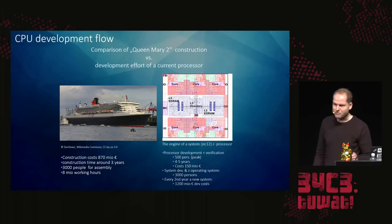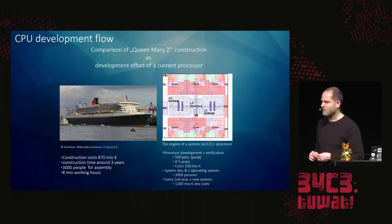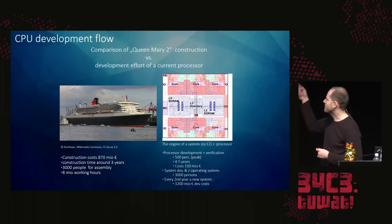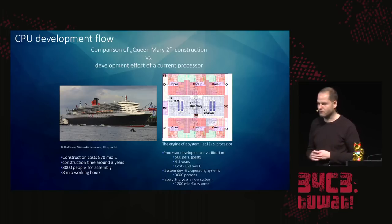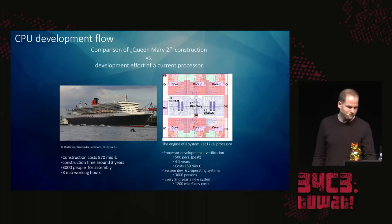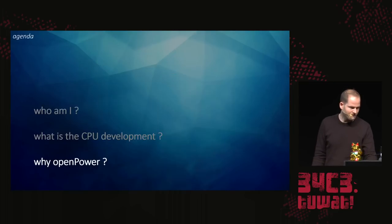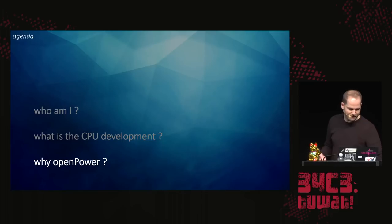There are two architectures currently being worked on at IBM: the POWER architecture and the Z architecture. Those numbers were for the Z processor, but you can compare them pretty similarly from a cost point of view. Let's now jump into Open Power.